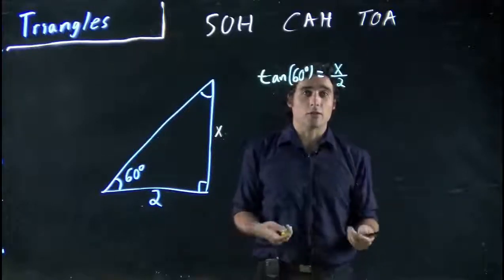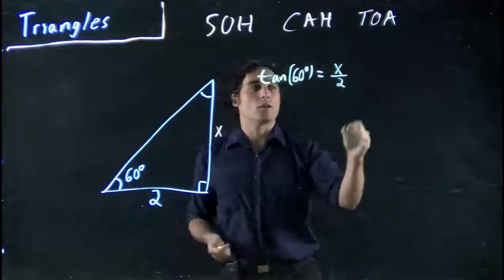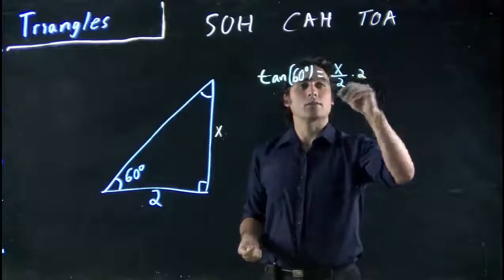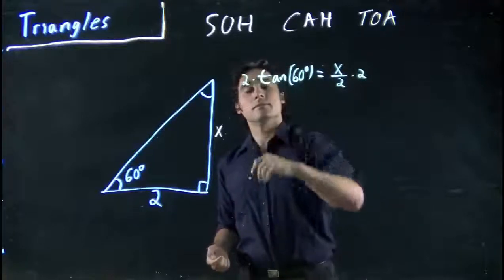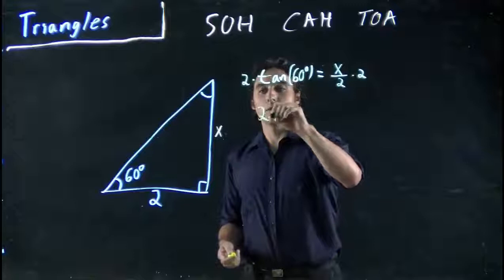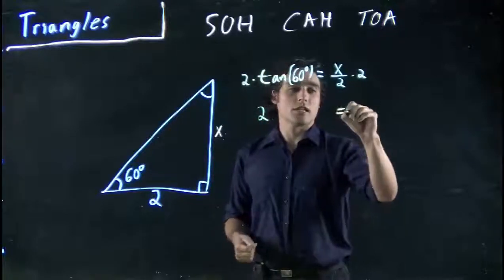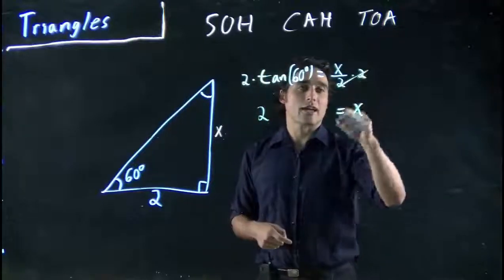Great. Now I just have an equation I have to solve for X. Well, if I want to solve for X, I've got to multiply both sides by 2. So I get 2 times, well, I'm going to just skip that for a second. These cancel. So I get X on this side.